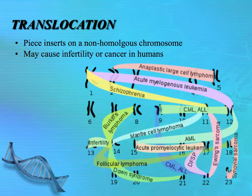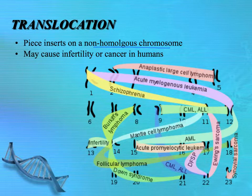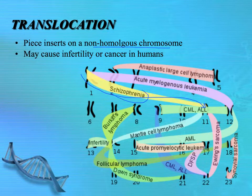The third type of change within the chromosome is translocation, where the piece of chromosome inserts on a non-homologous chromosome — it actually goes someplace else. This has been linked to infertility and a variety of cancers and other disorders in humans. For example, a piece of chromosome 1 attaching onto chromosome 11 has been involved in some types of schizophrenia, and most of the other disorders listed are cancers.